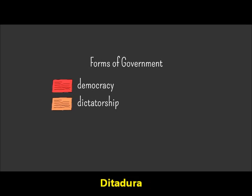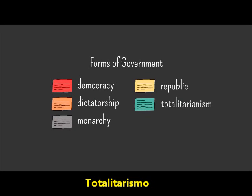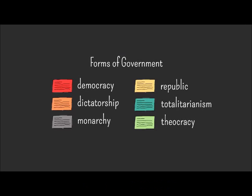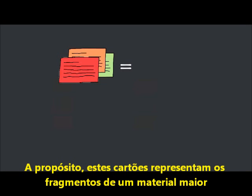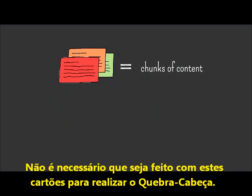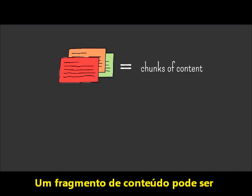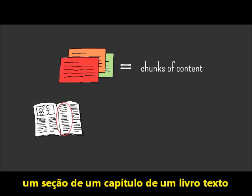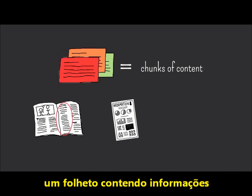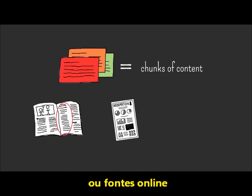For example: democracy, dictatorship, monarchy, republic, totalitarianism, and theocracy. By the way, these index cards just represent chunks of content — you don't need to use actual index cards to do jigsaw. A chunk of content can be a section of a textbook chapter, a handout containing information, or an online resource.